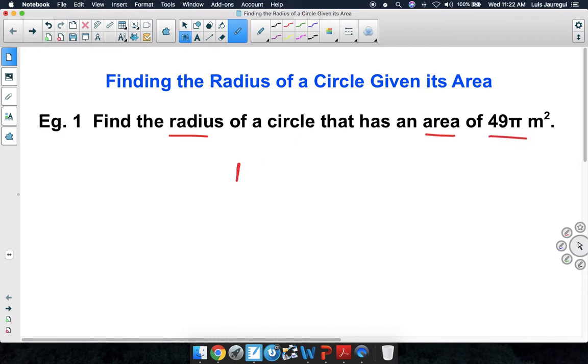So we're going to use the formula area is equal to pi r square. Now substituting in what we know, which is the area in this case, we can replace the A by the 49 pi meter square and that is equal to the pi r square.